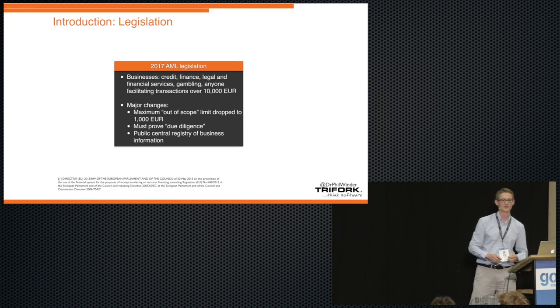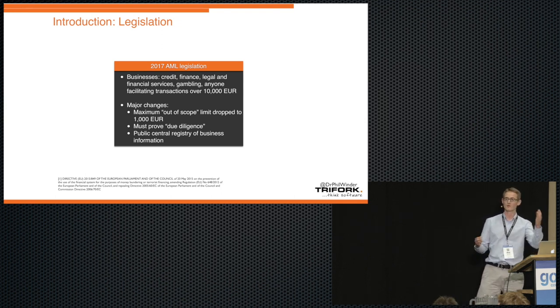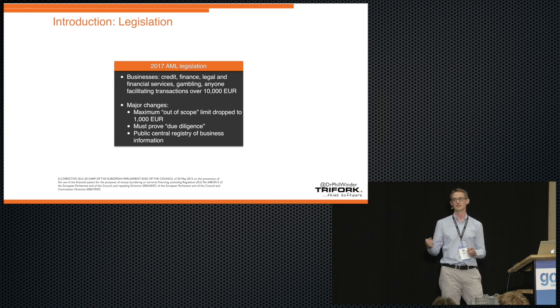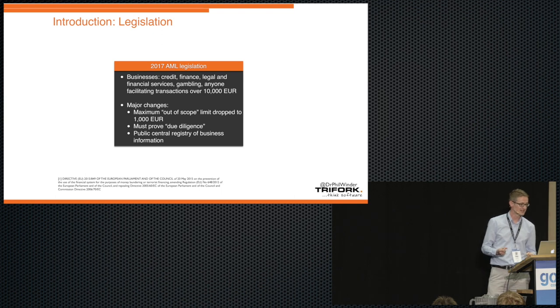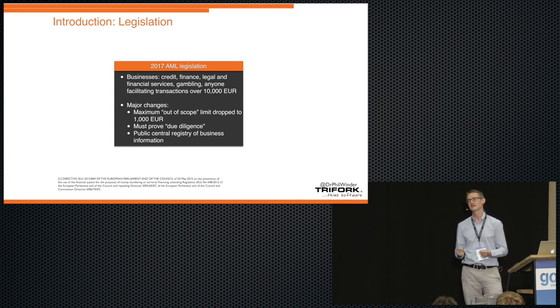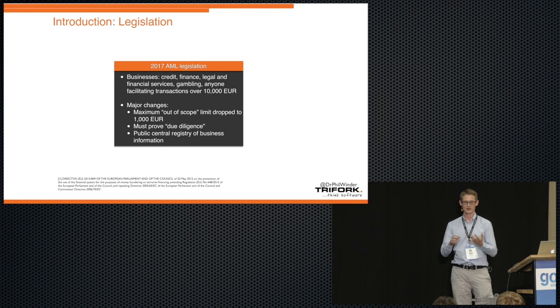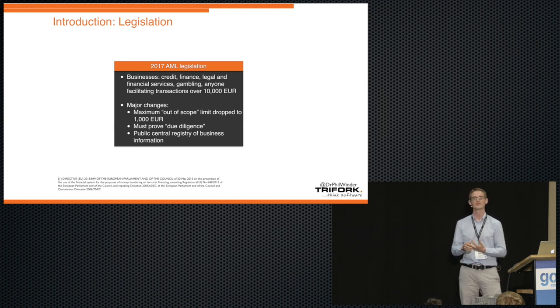Another reason why businesses might want to look at some of these ideas is that legislation. So we've got one end of the spectrum where there's people actually doing wrong to their businesses, so you might want to try and protect yourself. But also there's legislation, legal requirements that need to be put in place in order to comply to law. In 2017, there's new anti-money laundering legislation coming in within the EU, so it applies to all EU countries. It's extending money laundering rules that are already in place, but the main changes are that the out-of-scope limit has dropped to €1,000. So previously it was €15,000.